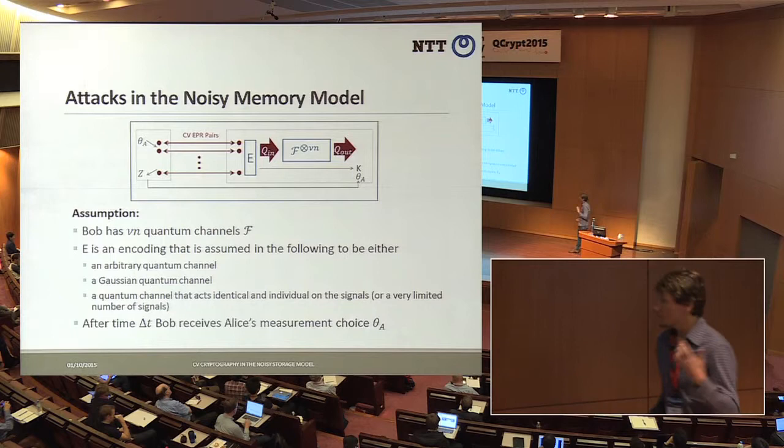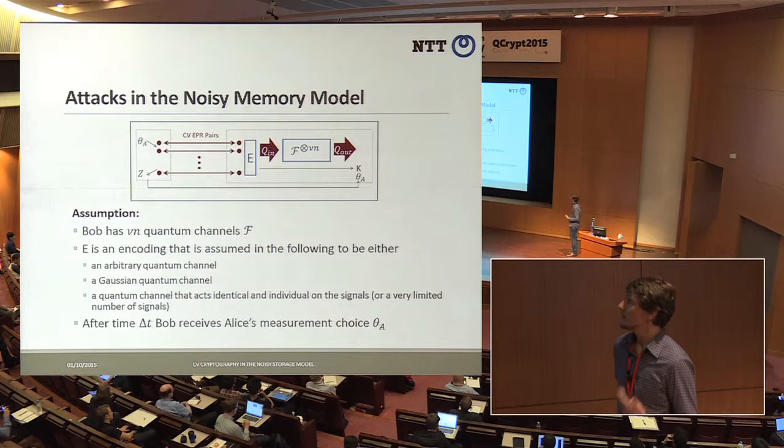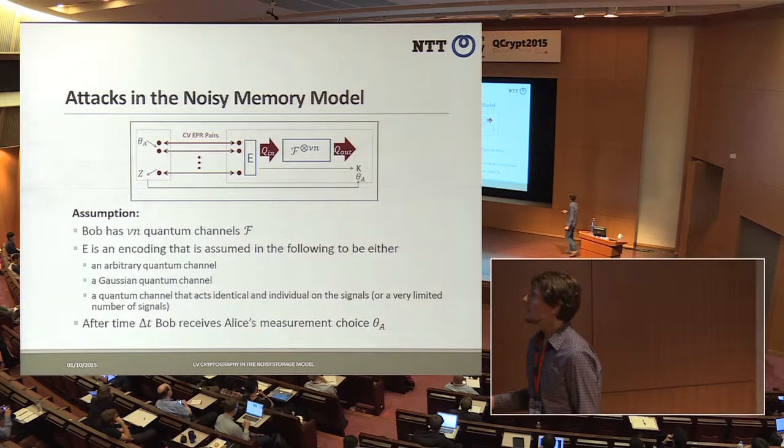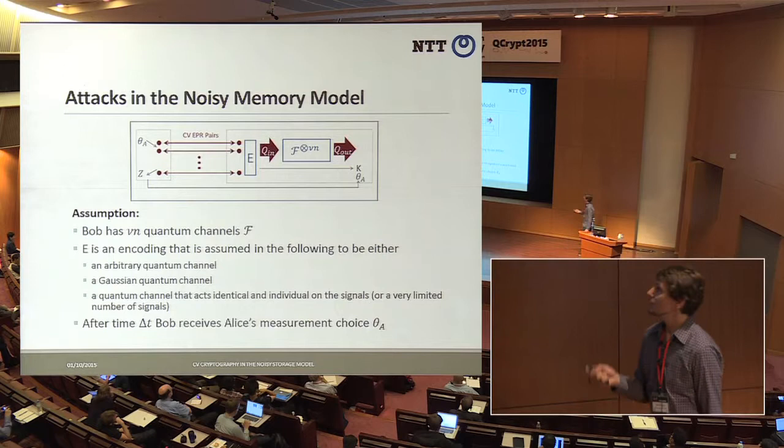We make a distinction about the power of this malicious party by looking at three cases: encoding strategies with no restriction; encodings that are a mixture of Gaussian channels; and encodings that act independently and identically on each signal, or at least on very small numbers of signals.